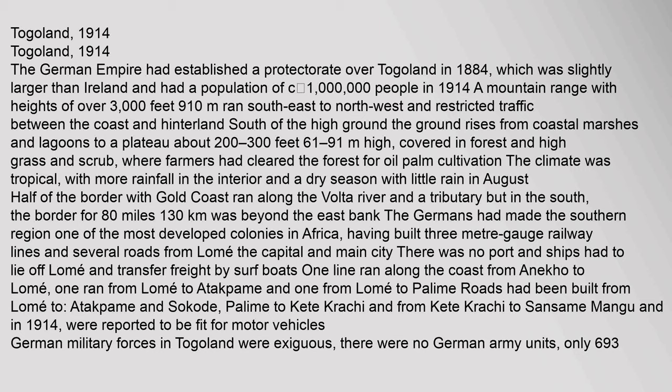The German Empire had established a protectorate over Togoland in 1884, which was slightly larger than Ireland and had a population of approximately 1 million people in 1914. A mountain range with heights of over 3,000 feet dominated part of the territory.